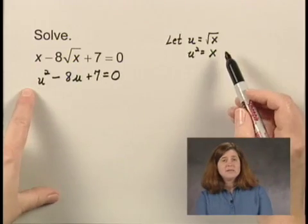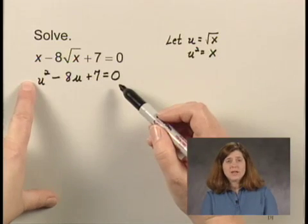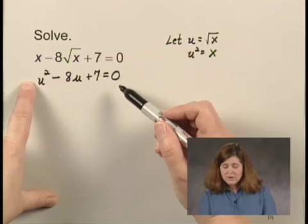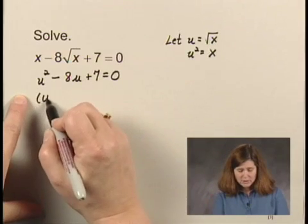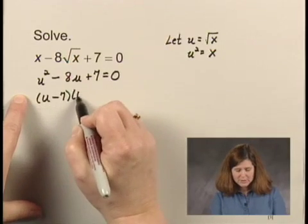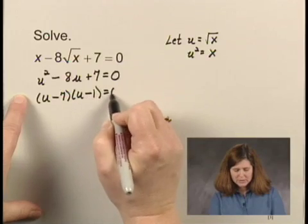Now, by making that substitution, I now have a quadratic equation, and this quadratic equation factors. It's u minus 7 times u minus 1 equals 0.